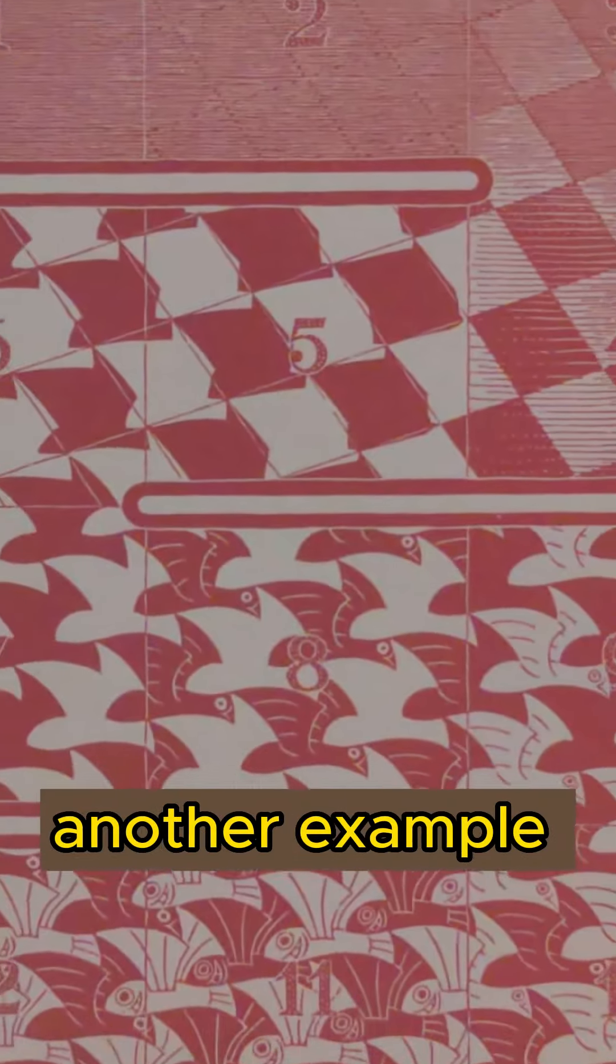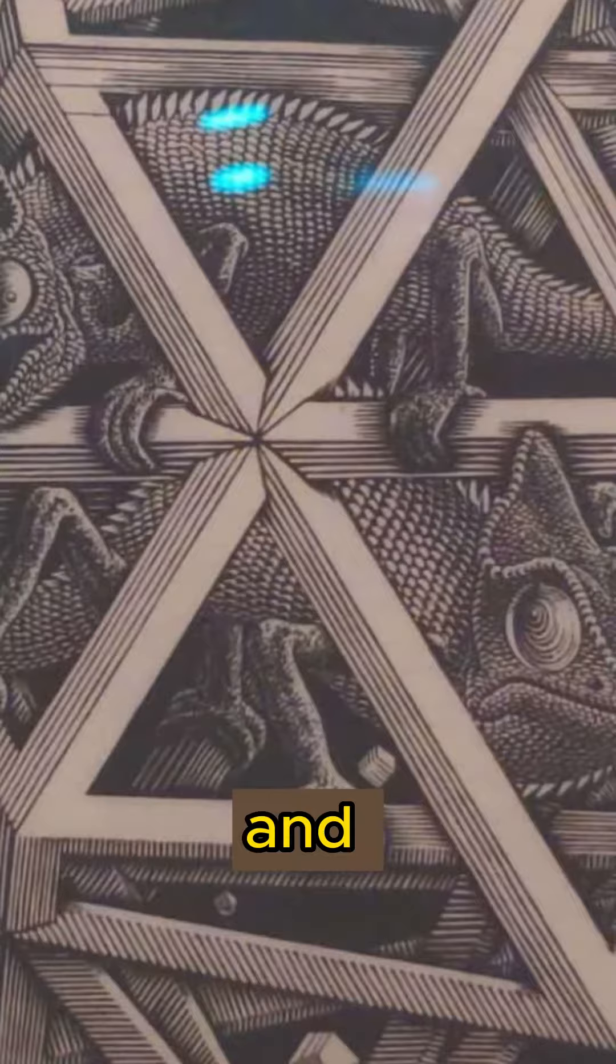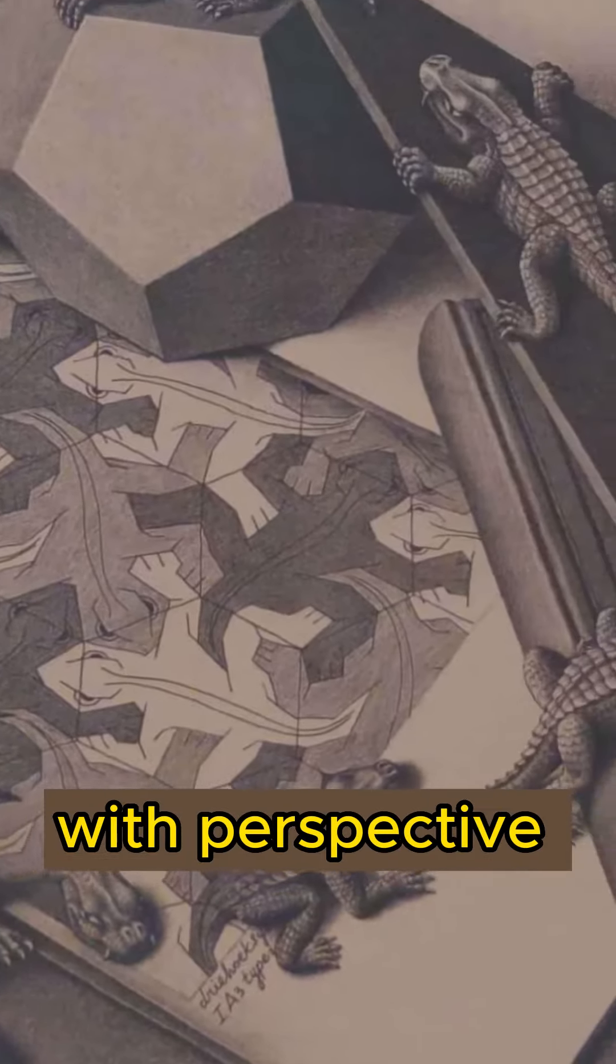Geometry is another example of how math and art relate. If we understand size, shape, distance, and position of objects in space, we can make art with perspective and dimension.